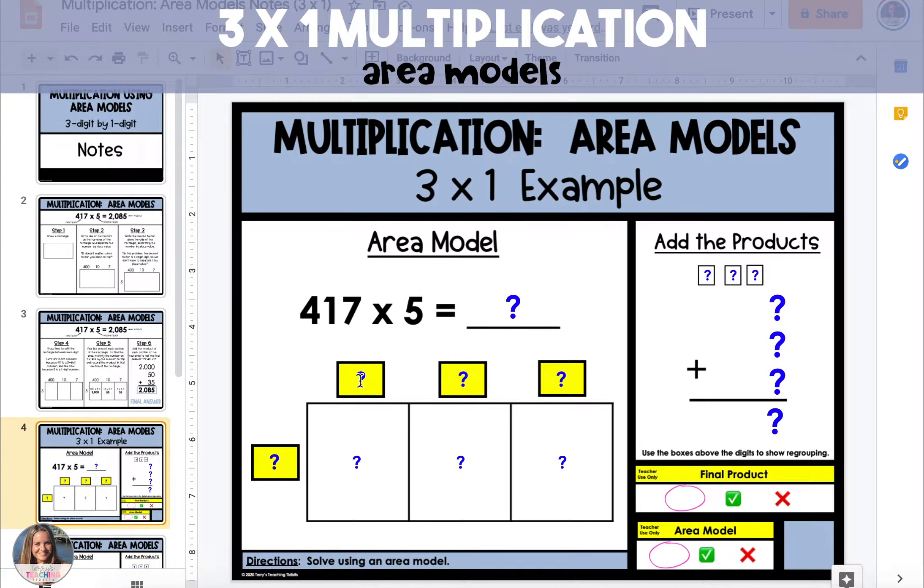When we do this we're going to separate our numbers by place value. So 417 will be written as 400, 10, and 7 on top and they'll each get their own column. And because 5 is a one-digit number it will be by itself on the side and there will only be one row in the rectangle.